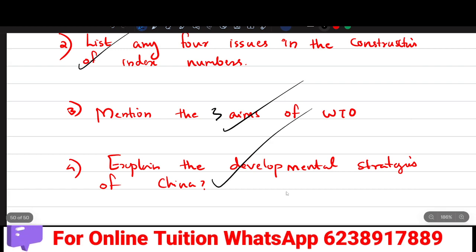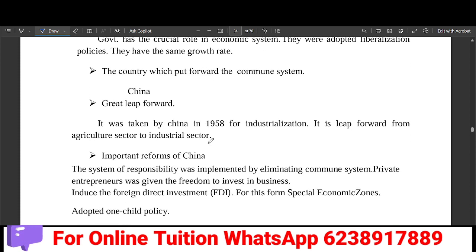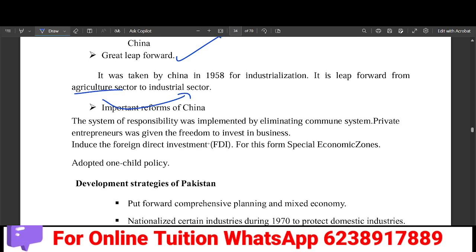Fourth question: Explain the developmental strategies of China. China has five-year plans starting in 1953. China has a communist system. Great Leap Forward in 1958 for industrialization, shifting from agricultural sector to industrial sector. Important reforms include allowing foreign direct investment, creating special economic zones, and the one child policy.